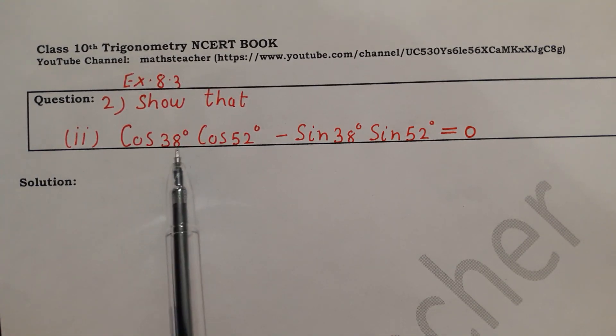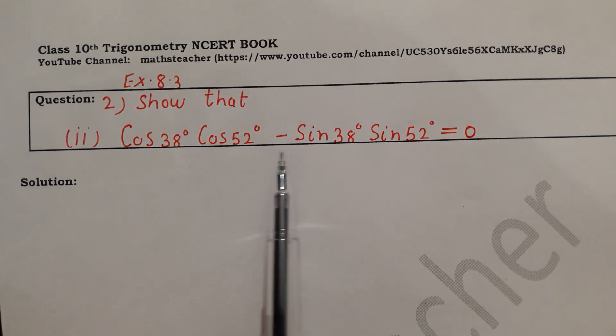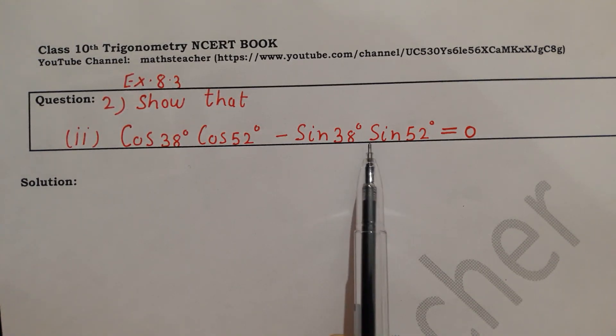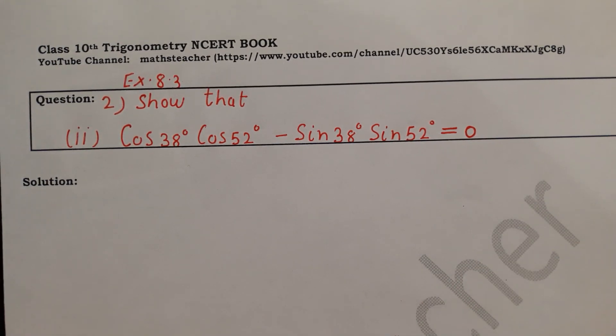Show that cos 38° cos 52° minus sin 38° sin 52° equals 0.